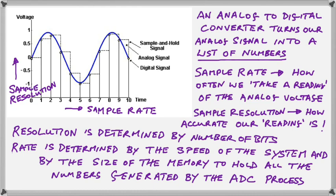The rate, more than anything, is determined by the speed of the system and our ability to hold all of these numbers generated by our ADC process, the size of the memory we are using.